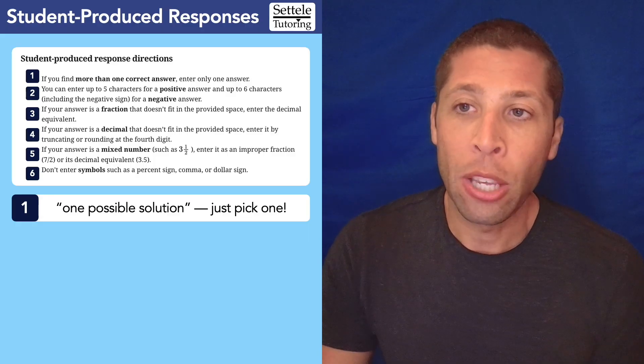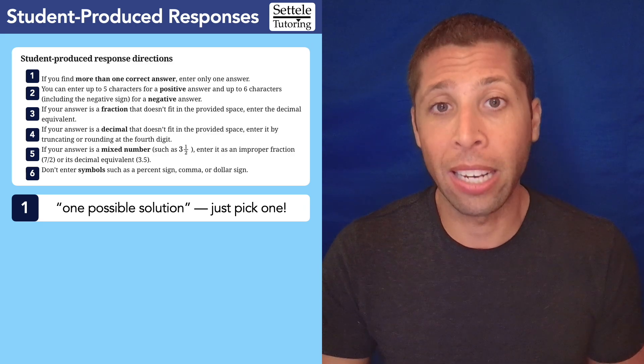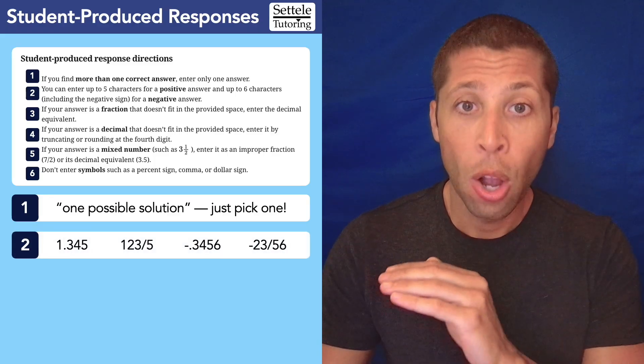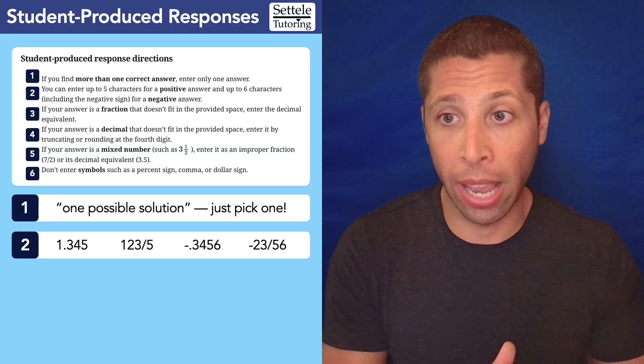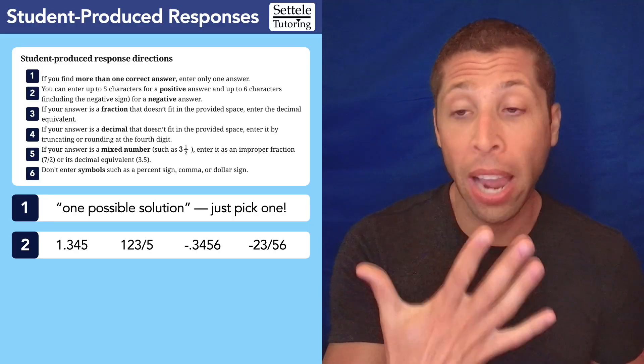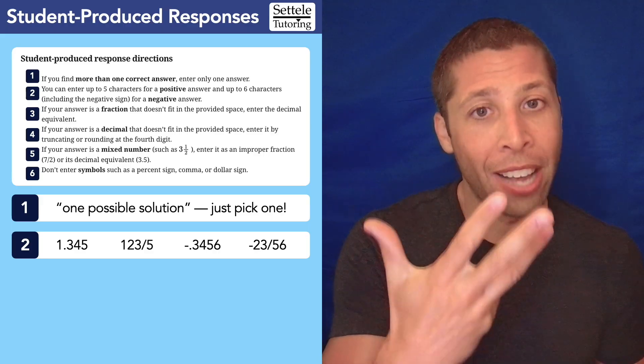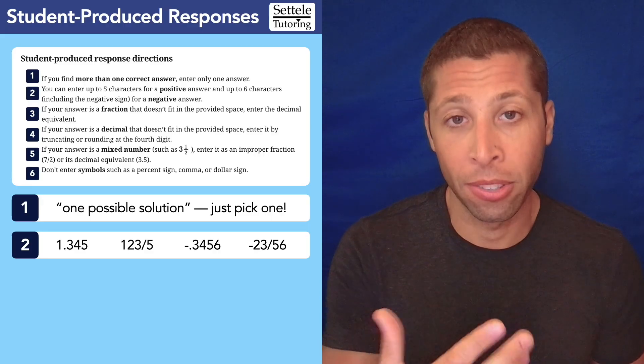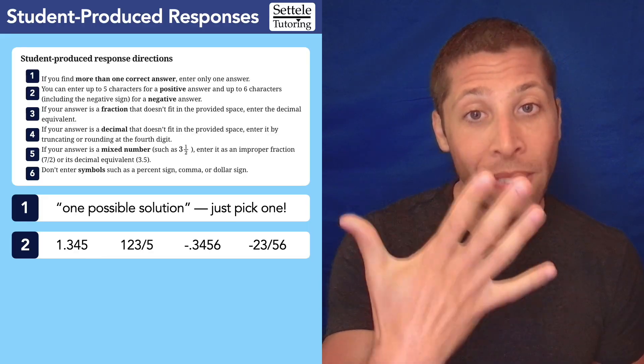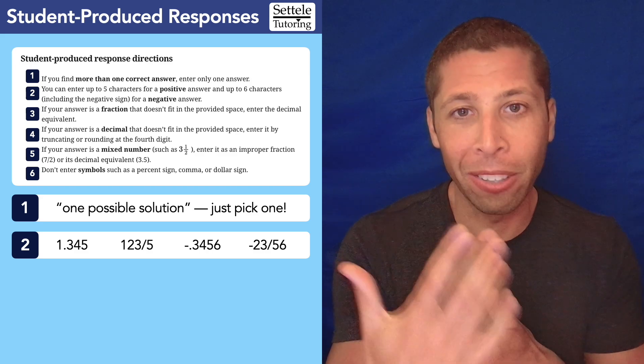Number two, you can enter up to five characters for a positive answer and up to six characters, including the negative sign for a negative answer. This is where people tend to get lost. So let's look at some examples. All of these numbers here would hit the character limit. Okay, so we can just count them up, right? 1.345. That is five characters because the decimal point counts. Moving on. 123 slash five is five characters. The fraction slash counts. Now for negative numbers, we get an extra, right? So negative 0.3456, six characters. We get the extra, but it's taken up by the negative.